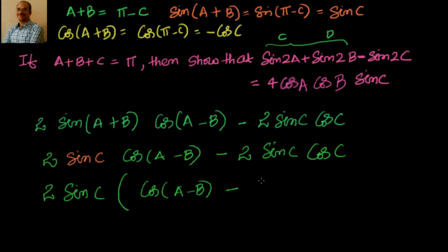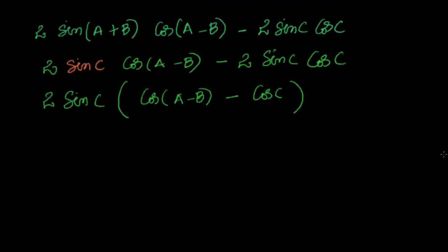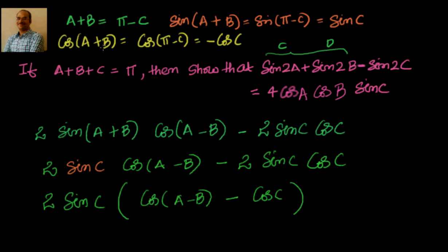Now you can convert c again back into a plus b, or if you are comfortable you can go ahead with that also, but maybe you have to apply a plus b plus c equal to π condition in the last step. Other than that we can convert cos of c as nothing but equal to minus cos of a plus b, that we have seen in the last video.